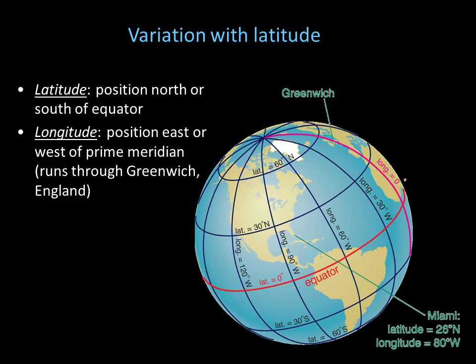Latitude measures your position north or south of the equator. It's zero at the equator, 90 degrees at the north pole, and minus 90 degrees at the south pole. Longitude measures your position east or west of the prime meridian. The location of the prime meridian — the zero point for longitude — is arbitrary; it's been in different countries throughout history, and it's in Greenwich, England now.